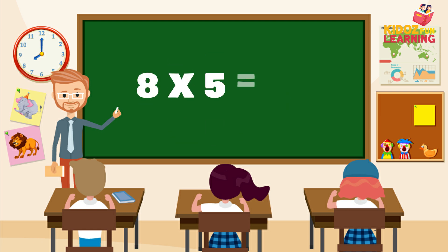8 fives are 40, 8 sixes are 48, 8 sevens are 56, 8 eights are 64, 8 nines are 72, 8 tens are 80.